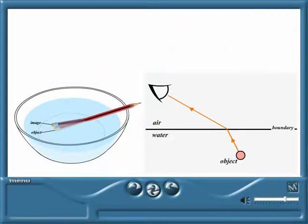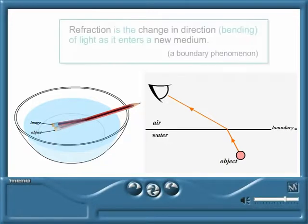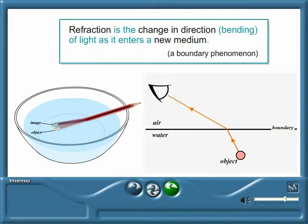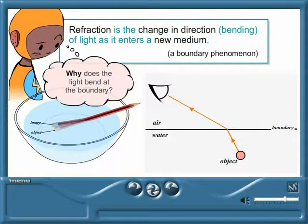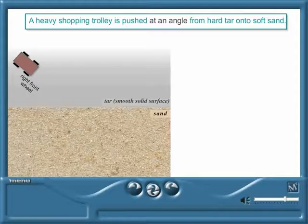This bending of light rays when they enter a new transparent medium is called refraction. Before we can explain this phenomenon properly, we need to understand why and how light bends at a boundary. To explain what happens to light when it enters a new medium, we will use the analogy of a shopping trolley being pushed at an angle from smooth tar onto soft sand. Click on the trolley.